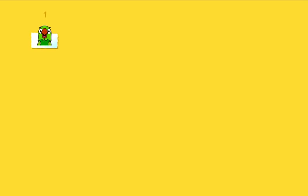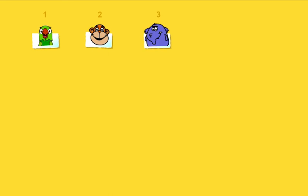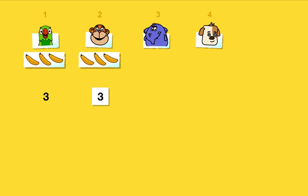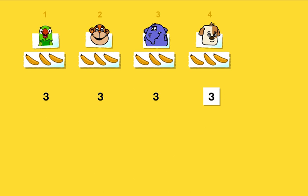There will be four people at the party. Gul wants to give each one three bananas: three bananas for Tota, three bananas for Jojo, three bananas for Thud, and three bananas for Gul. So Gul needs three plus three plus three plus three bananas.